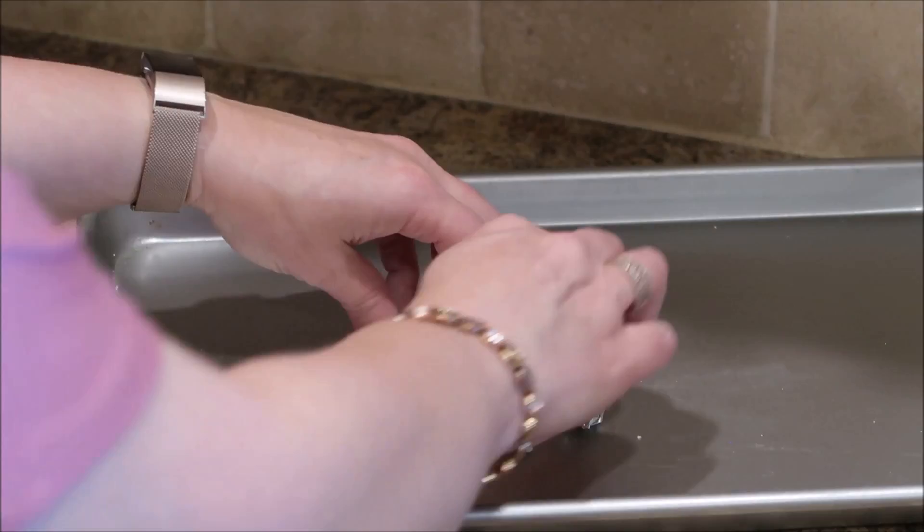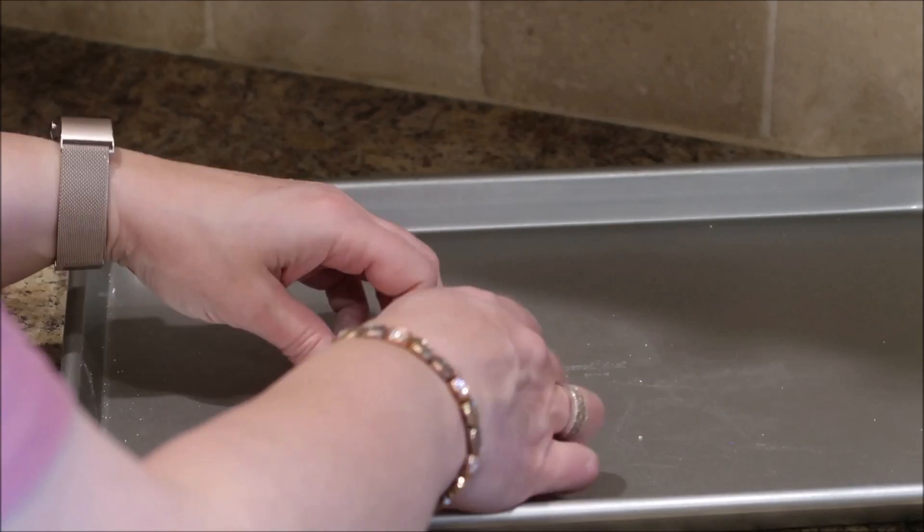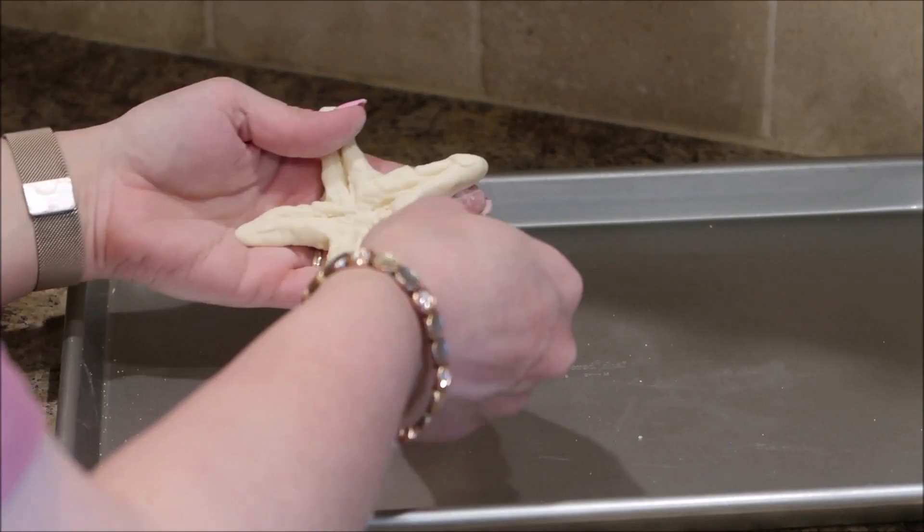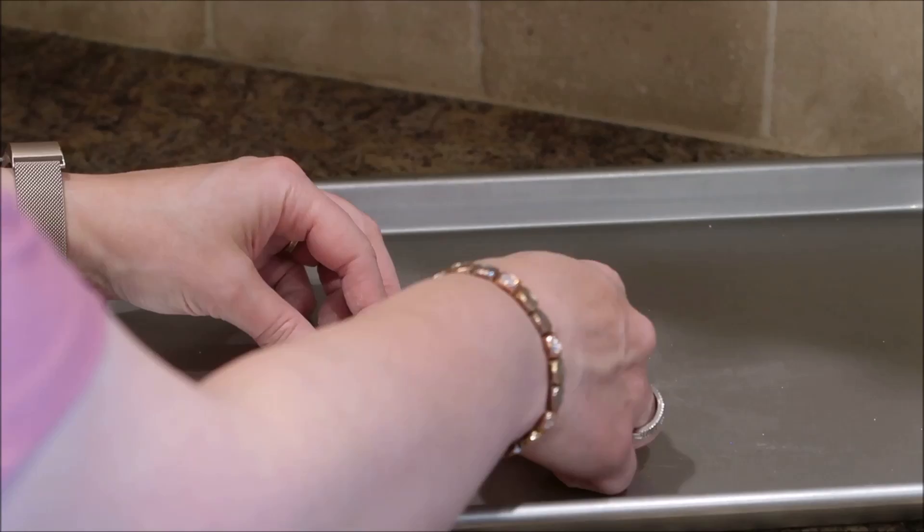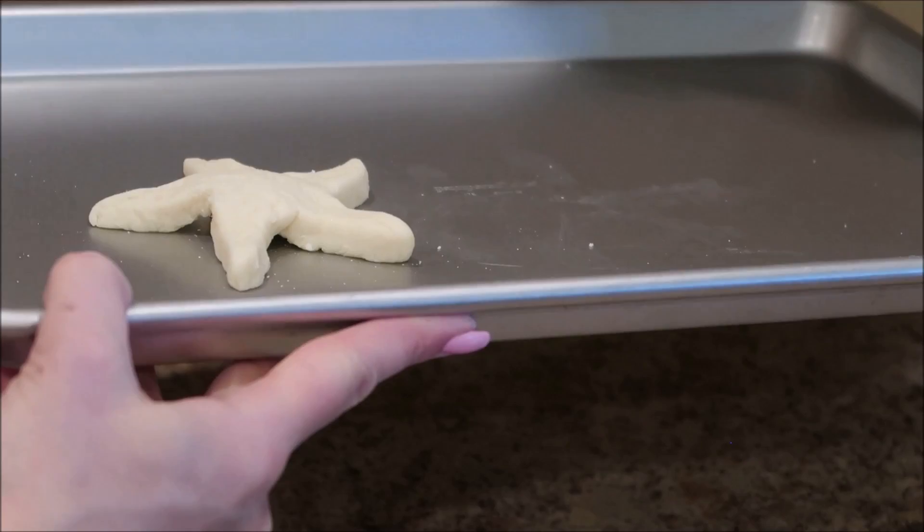One tip that you might want to try, and I didn't try this, but I think it would work, is if you wanted to use a star-shaped cookie cutter to cut out your dough to get a basic shape to start with, you could do that and then maybe kind of shape and stretch and twist to get your starfish to look a little bit more natural like a starfish and not so much like a cookie that was just cut out with a star-shaped cookie cutter. But that might be a good starting place. I just did mine this way, but whatever works for you, I say go for it.